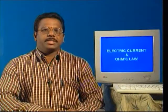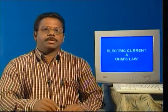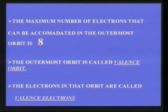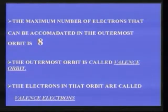A force of attraction binds the electrons in an atom to the nucleus. This force is inversely proportional to the square of the distance between the nucleus and the orbit. Therefore, the force of attraction between valence electrons and the nucleus will be low, and such valence electrons can be easily removed by applying external energy. The maximum number of electrons in the outermost orbit is 8 only; the 2n² formula is not applicable to the outermost orbit. This outermost orbit is called the valence orbit and the electrons in it are called valence electrons.